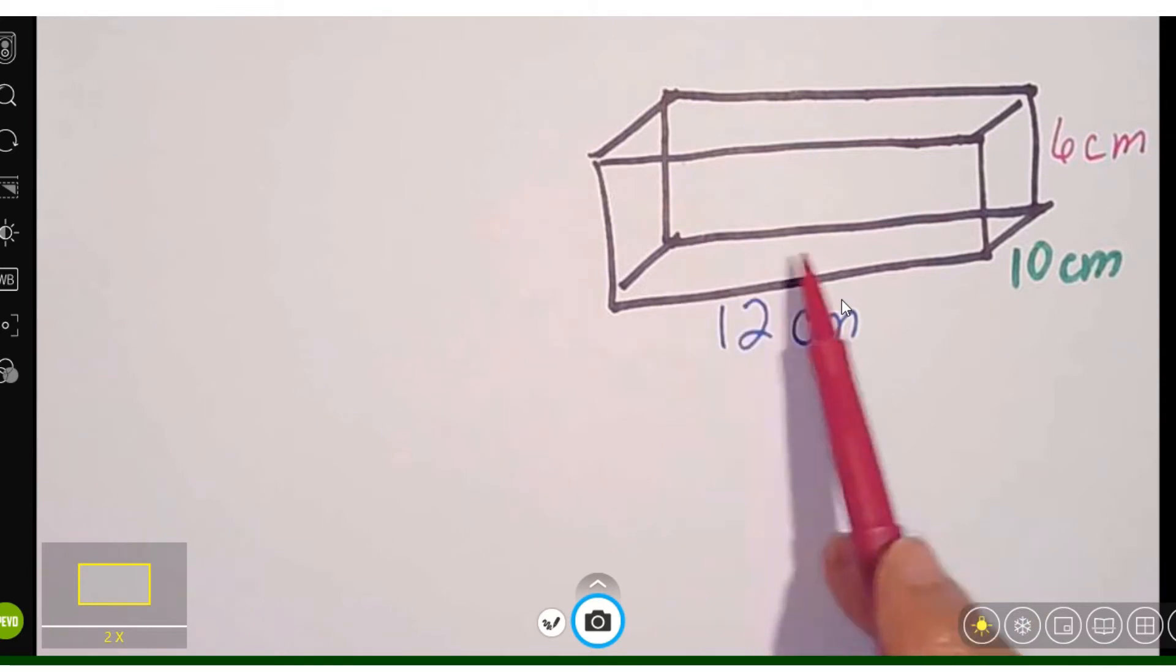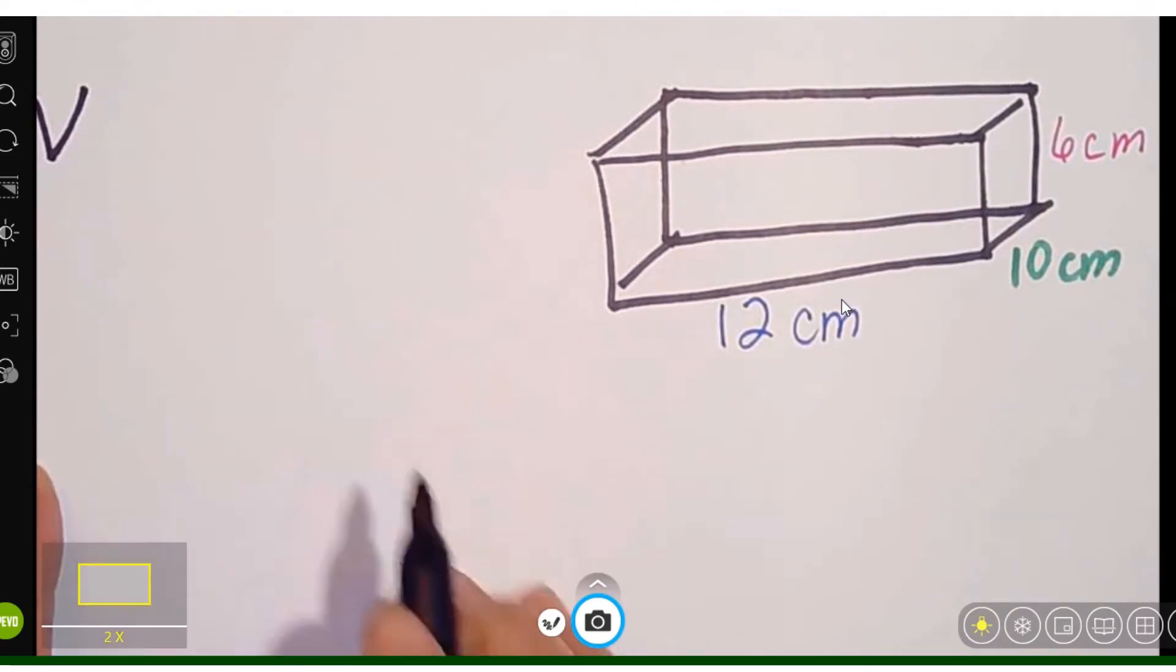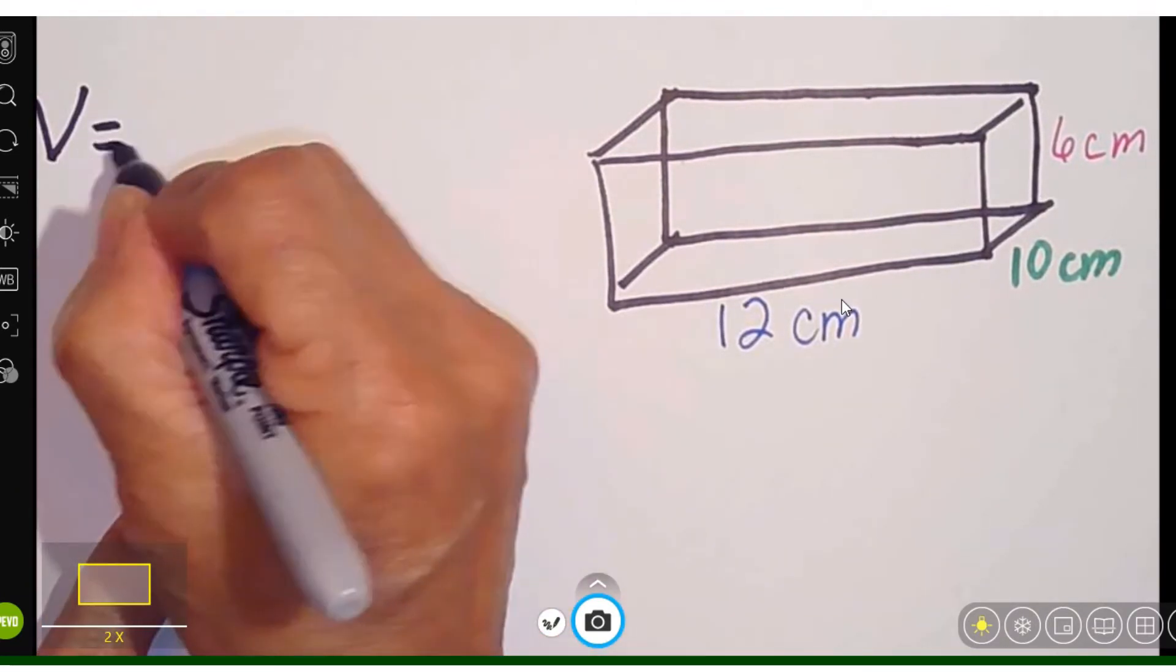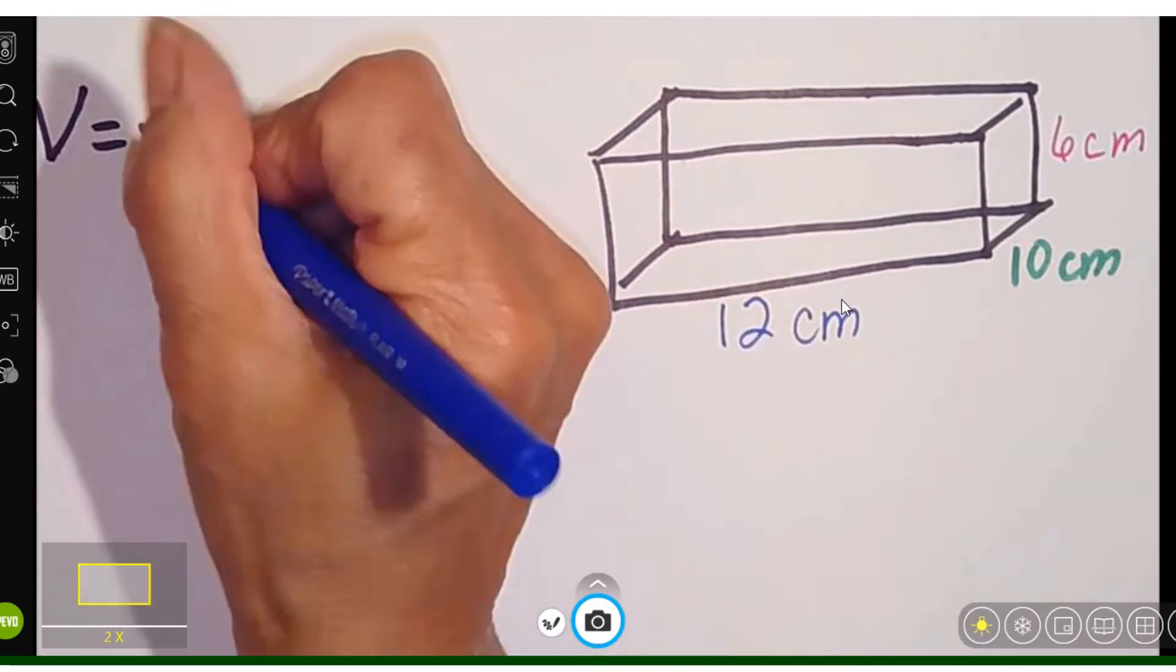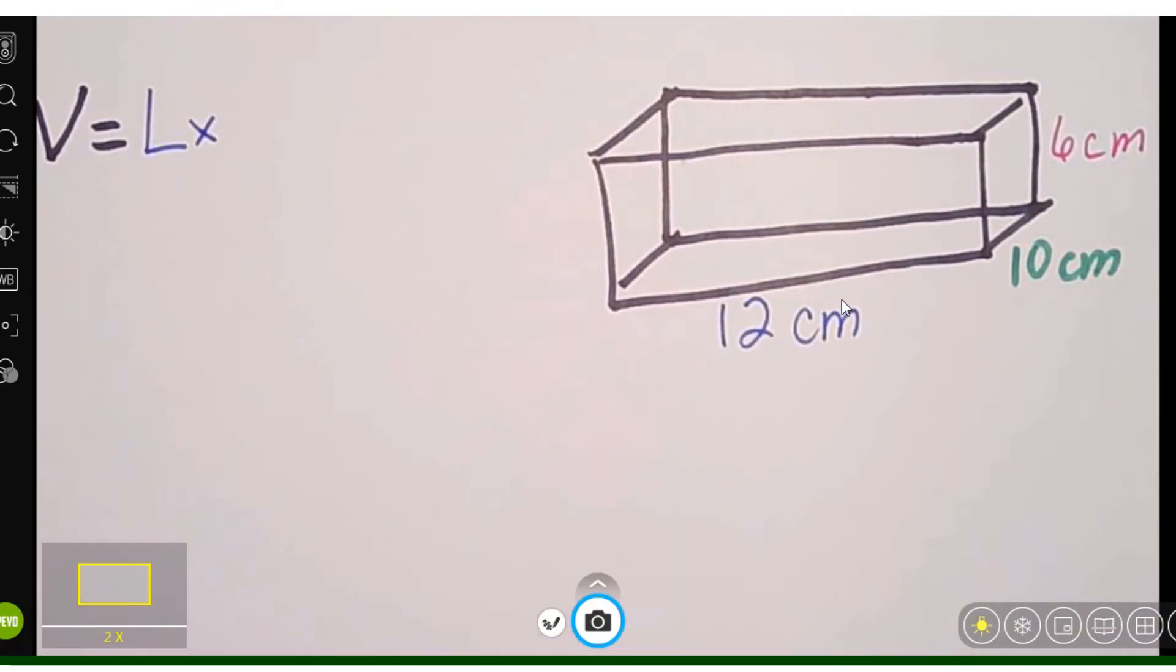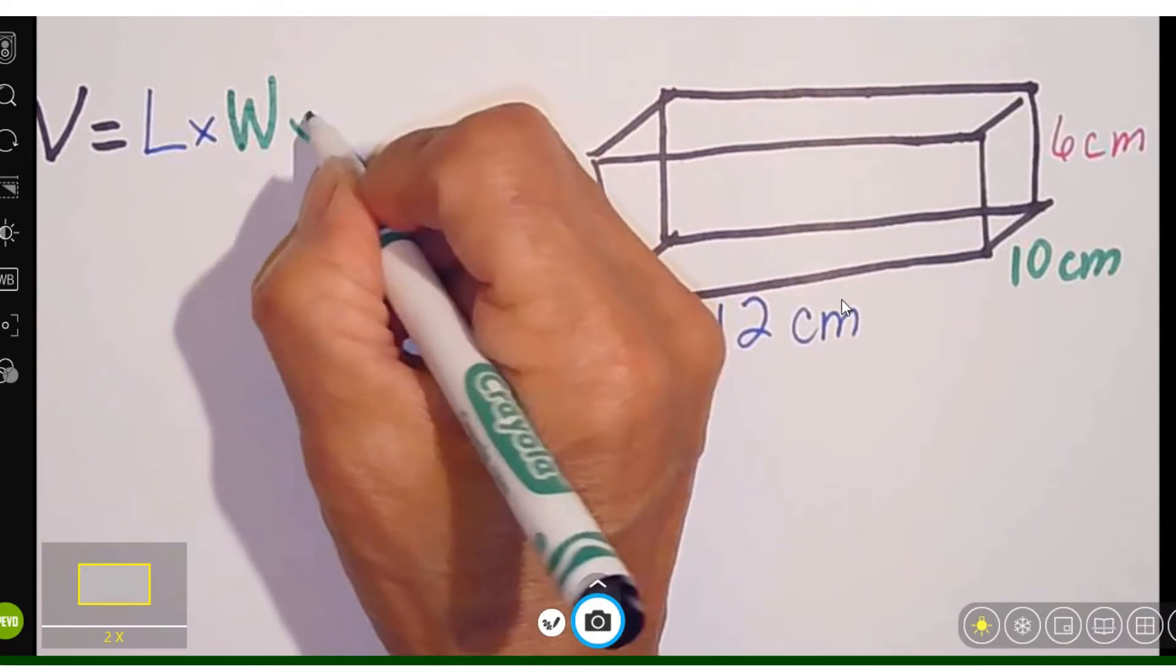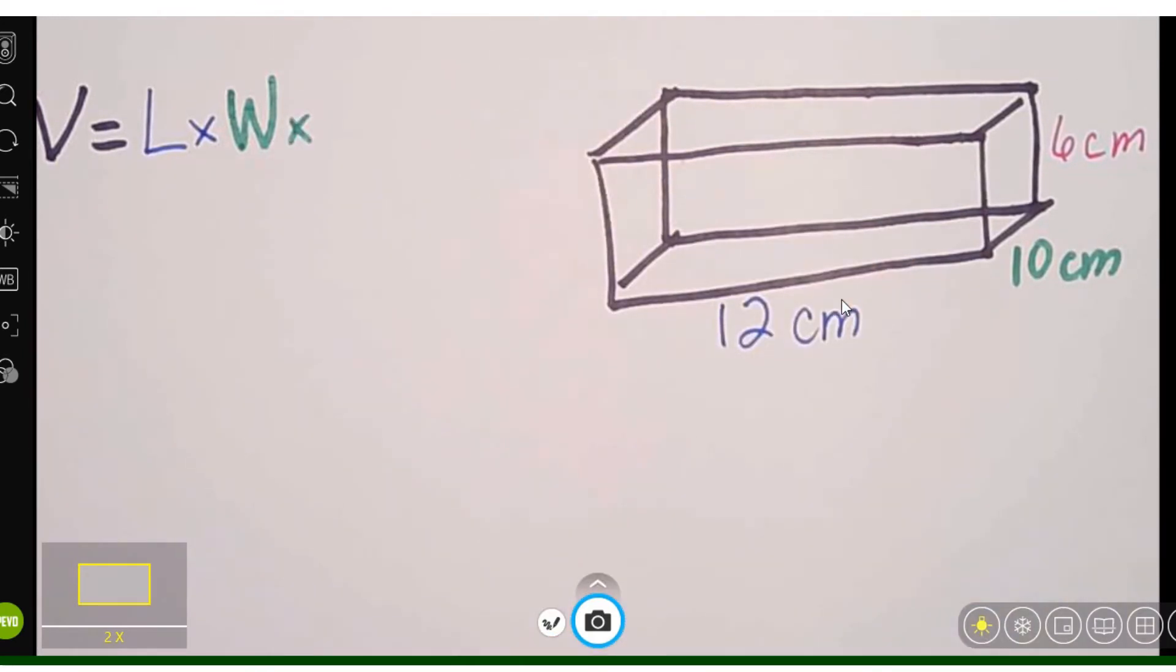We're trying to find out what the volume is. That's everything that's on the inside of that cube. So there are two different methods that you could use: length times width times height.